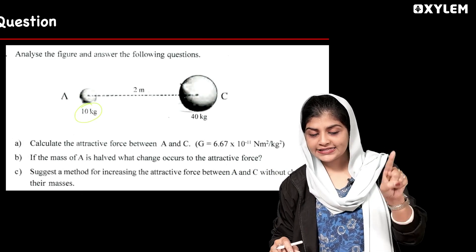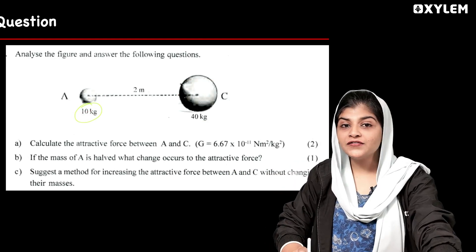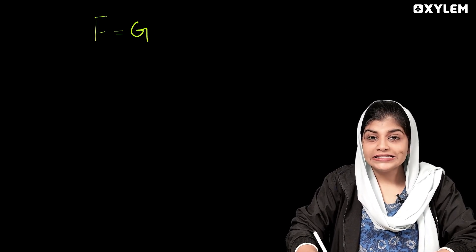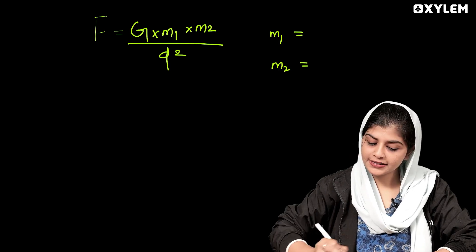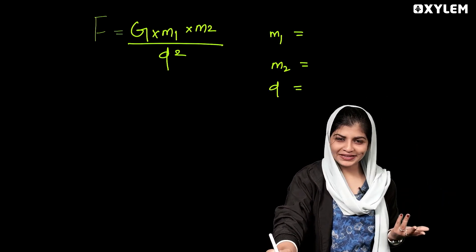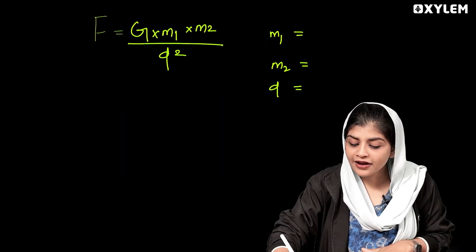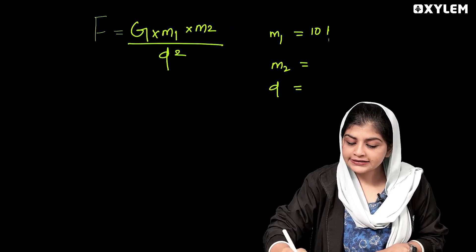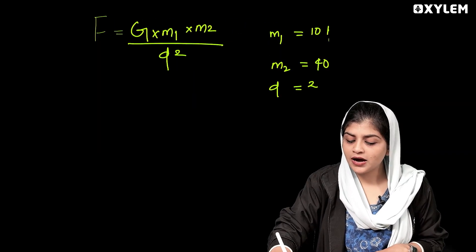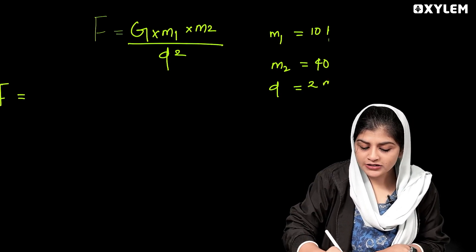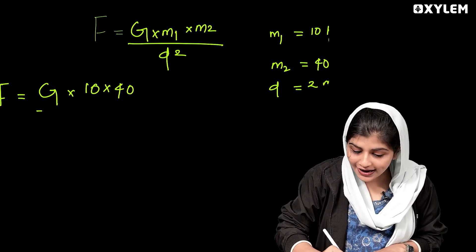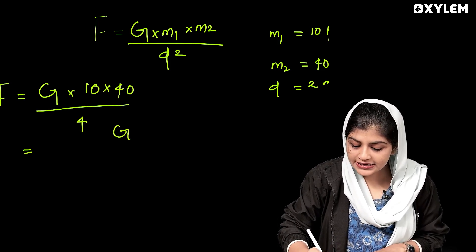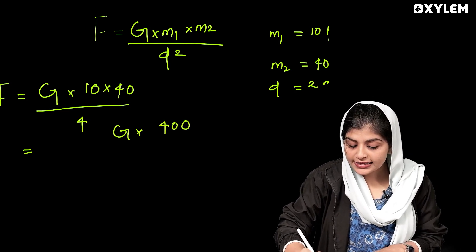Calculate the attractive force between A and C. A and C are separated by a distance. F is equal to G into M1 into M2 divided by D squared. M1, M2, and D are given — 10 is the value, separated, and D gives us G into 143 divided by 4.